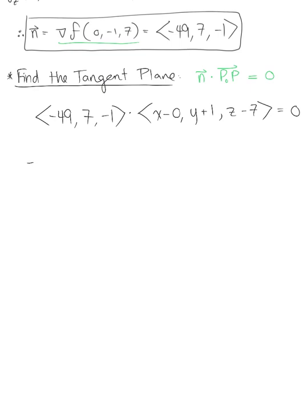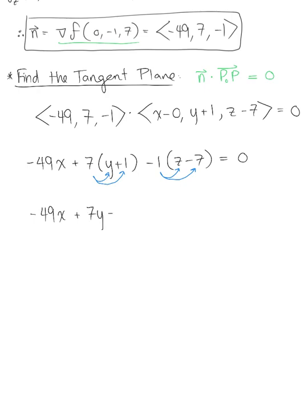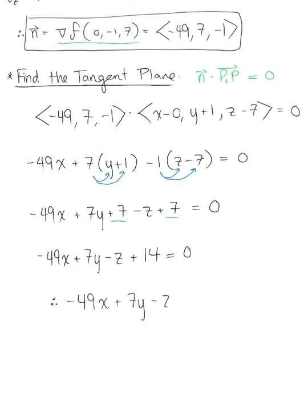Applying the dot product, we have negative 49 times x, plus 7 times (y plus 1), minus 1 times (z minus 7), equal to 0. Distributing and combining like terms gives us negative 49x plus 7y plus 7 minus z plus 7 equals 0, which simplifies to negative 49x plus 7y minus z plus 14 equals 0. Therefore our final answer for the tangent plane is negative 49x plus 7y minus z equals negative 14.